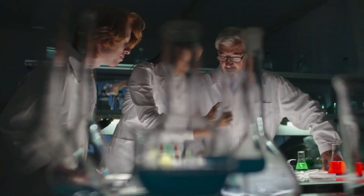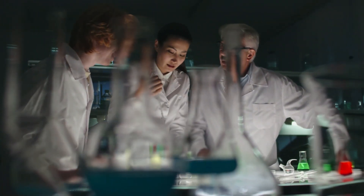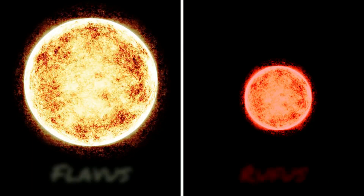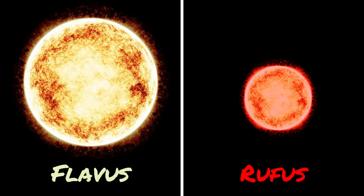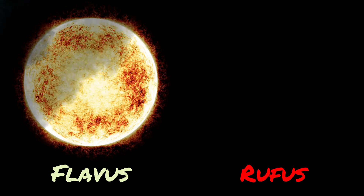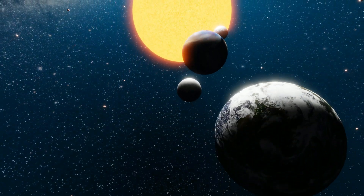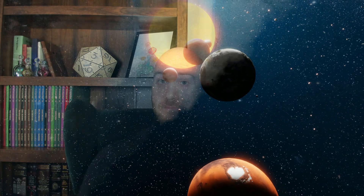Hey everyone, my name is Matthew, at least while I'm still in orbit, and this video is part of a series where I'll be going through a science-adjacent worldbuilding process step by step. Last time, we created the stars of our solar system, Flavus and Rufus, which gave us all the information we'll need to move forward with making the rest of the planetary system.